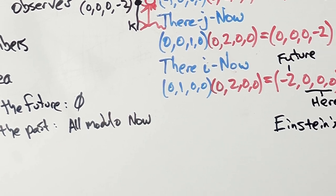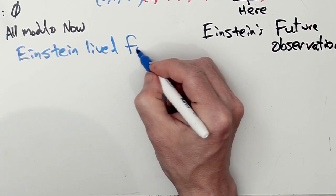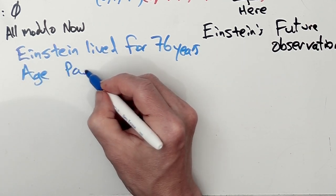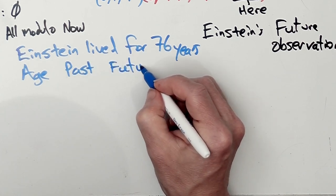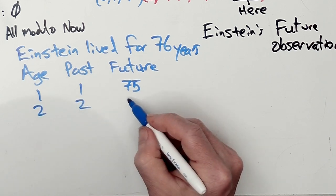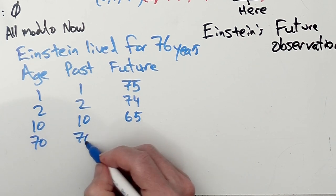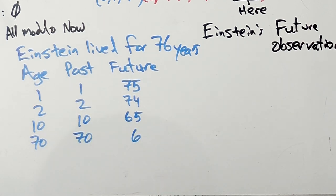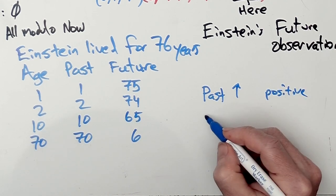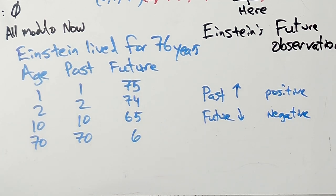Now, if we think about that sort of idea for Einstein himself, he lived to 76. Looking at his age, how much past versus how much future, when he was one, just a babe, he had 75 years ahead. It doubled his past at age 2, got to 74, and on and on. So we can see that the past is increasing, but the future is decreasing.